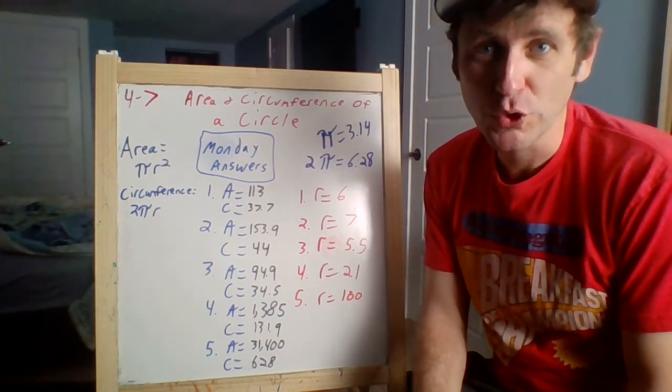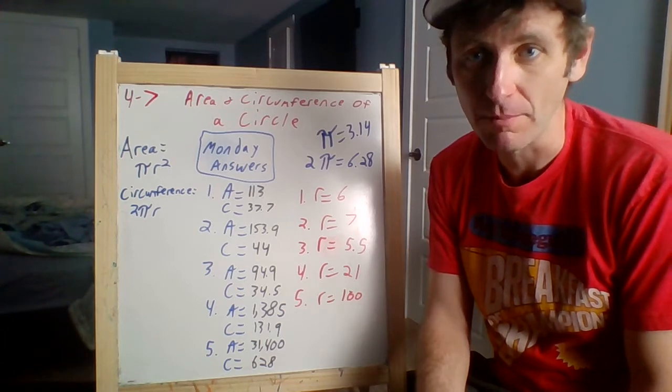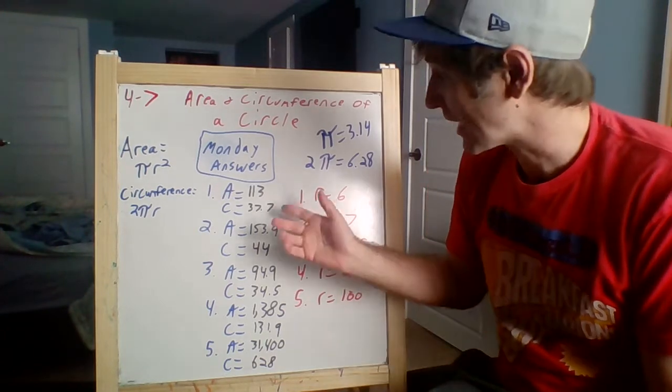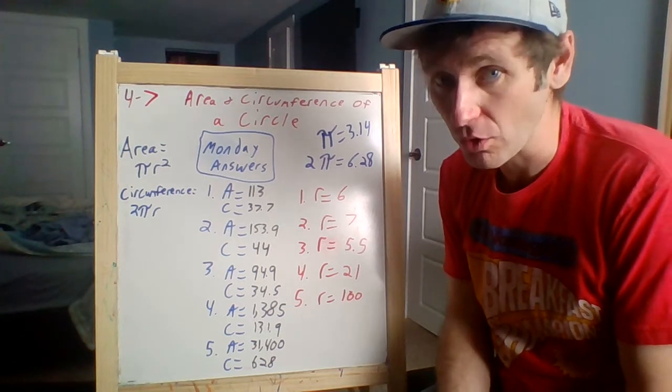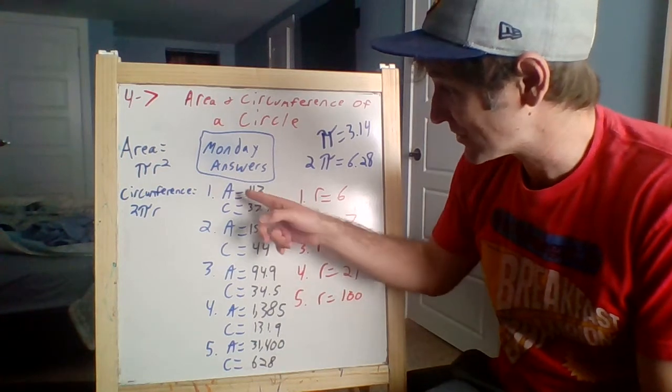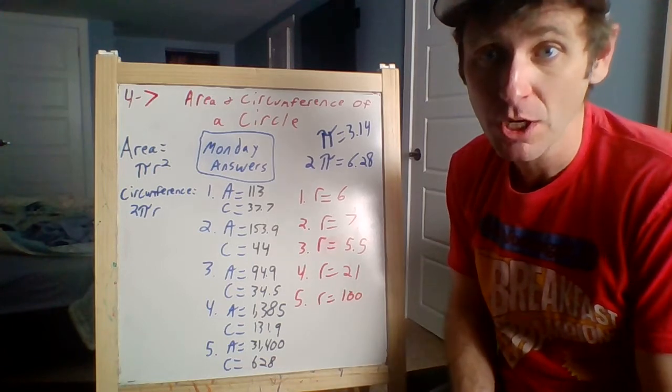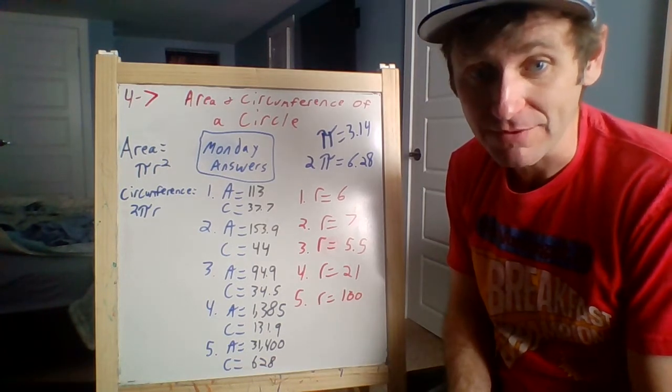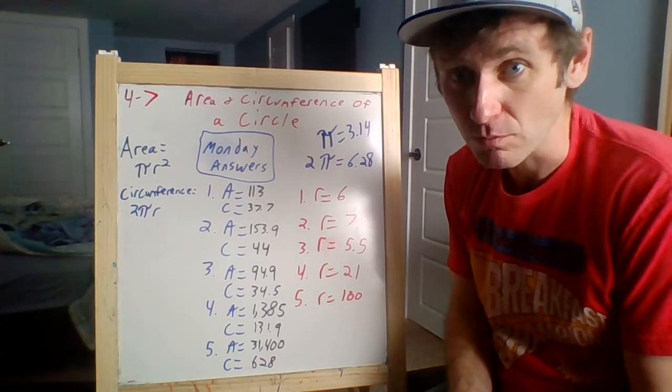Hey guys, back for Tuesday. I have your answers to go over from yesterday. Let's take a look up here. We did area and circumference of a circle. You can check all the work you did. If you want to pause your screen, see if you got these answers. A is area, C is circumference, so you have two answers for each problem. Go through, check to see if you got those or very close to it, and check back in one minute.